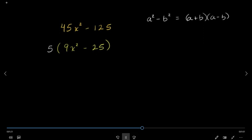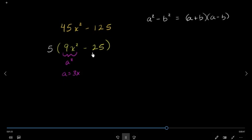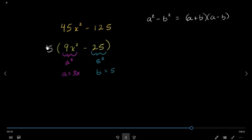We will take the right side. So we have 2x minus 2x. Because the number is 3x. So if you do 3x minus 2x, then you will have 9x squared. So if you do 25, then you will have 5, and then 3x. So if you do 9x squared minus 25, then you will have a plus b and a minus b.